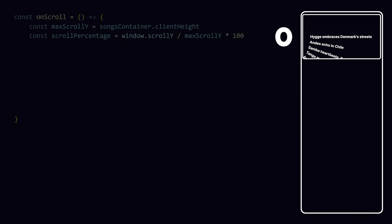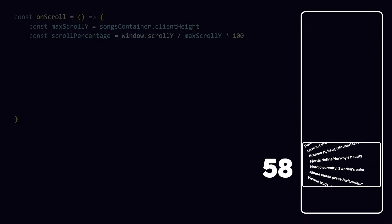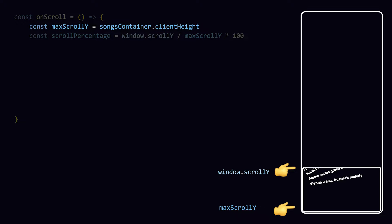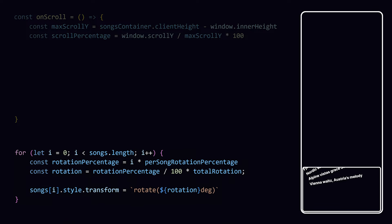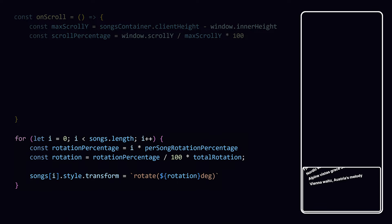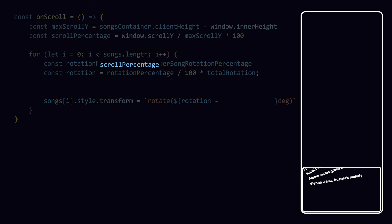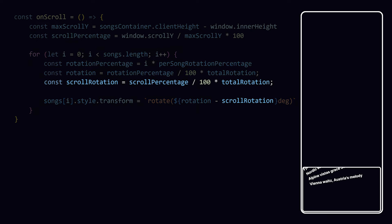At the top that value should be 0, but if we scroll to the bottom we'd expect it to be 100 — somehow it's not. The scroll Y value is the Y value of the top of the screen, so if we want to know when we reach the bottom we have to subtract the current screen size from the container height. Now let's move that for loop inside this handler and subtract the specific rotation amount based on the current scroll position.